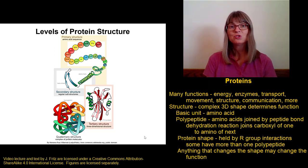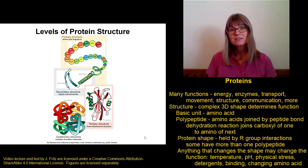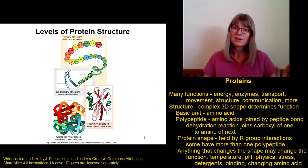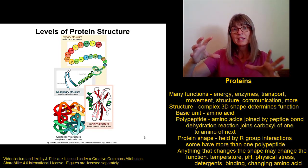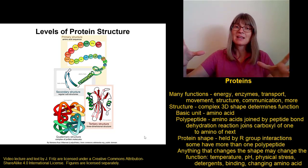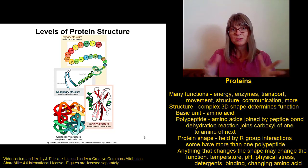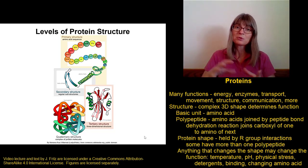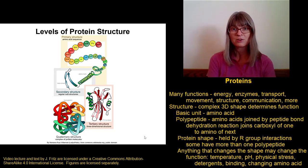There are many different things that can change the shape of a protein. One simple thing is to change the temperature. As you heat up a protein, all of the molecules and atoms start moving more quickly, which can break apart some of those interactions holding the amino acids together and cause the protein to unfold. That's called denaturing a protein. Increasing the temperature can denature or unfold the protein, and then it will no longer be functional.